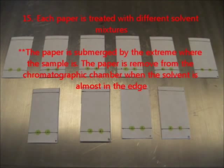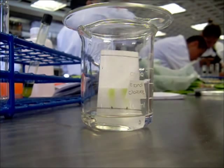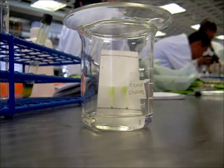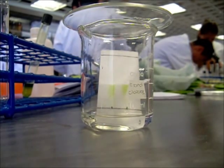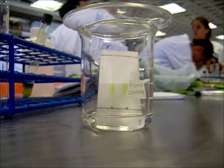Each paper is treated with different solvent mixtures. The paper is submerged by the stream where the sample is. The paper is removed from the chromatography chamber when the solvent is almost at the edge.